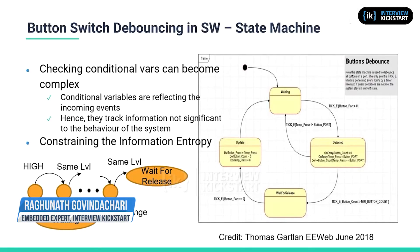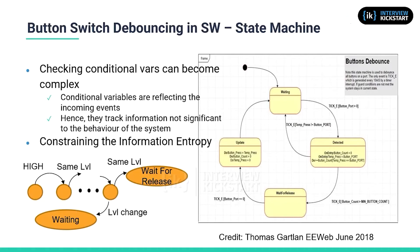Let's revisit the debouncing state machine that we saw earlier. On the right side you see the exact same diagram, wherein a counter variable is used. In each epoch, when the newly read button level is same as the previous level, it stays in the same state up to a min_button_count times, after which it goes to the wait-for-release state. Upon the first level change, it goes out to the waiting state. In the absence of a count variable, this can only be expressed by so many internal states, as shown in the figure on the left — for each epoch it moves from one internal state to the other until it reaches the min_button_count state.